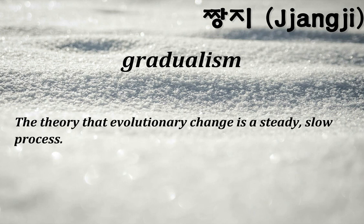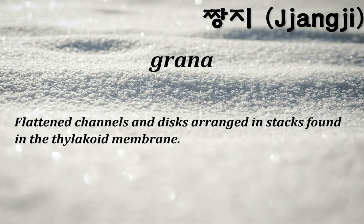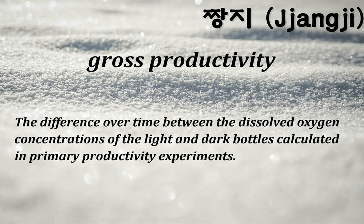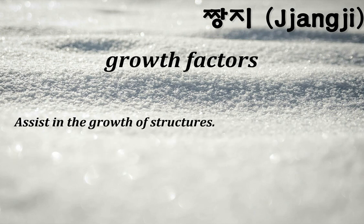Gradualism: the theory that evolutionary change is a steady, slow process. Grana: flattened channels and disks arranged in stacks found in the thylakoid membrane. Gravitropism: a plant's growth response to gravitational force; auxin and gibberellins are involved in this response. Gross productivity: the difference over time between the dissolved oxygen concentrations of the light and dark bottles calculated in primary productivity experiments.